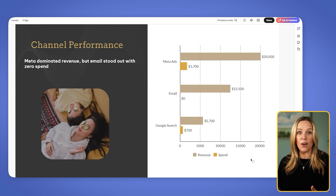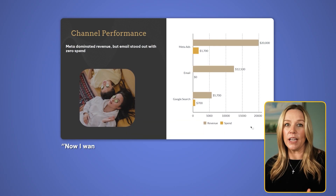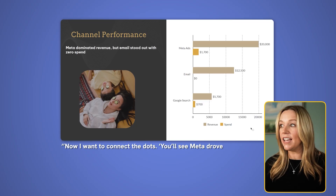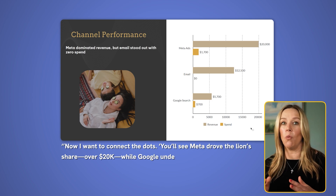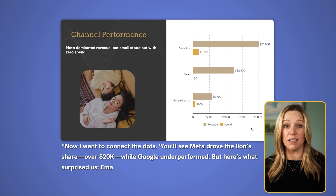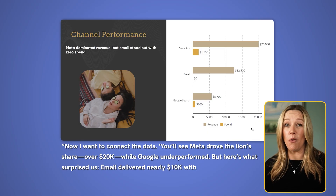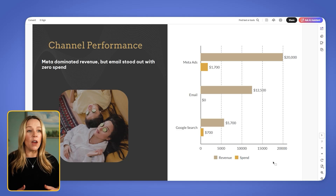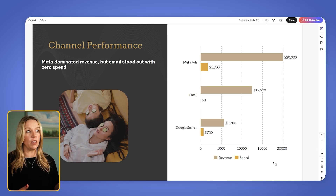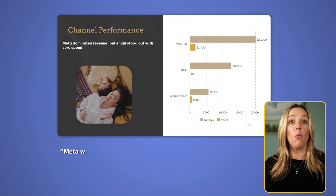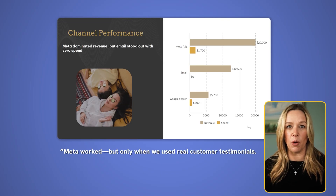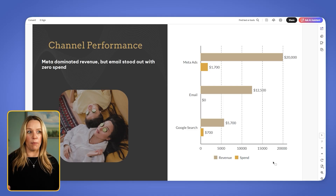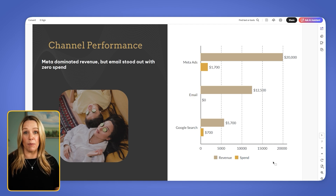Next, we would move on to that channel breakdown and say something like: now I want to connect the dots. You'll see that Meta drove the lion's share — $20,000 — while Google wildly underperformed. But here's what surprised us: email did over $10K with no spend. And here we let the bar chart hold the comparison so that we can tell the story. We always want to call out the most important insight, not just the info. So we could just read through it, but we want to say something like: Meta worked, but it worked when we used real customer testimonials. That way we're sharing a takeaway, not just a number — we're sharing why those numbers matter and how we can continue to use that information moving forward.